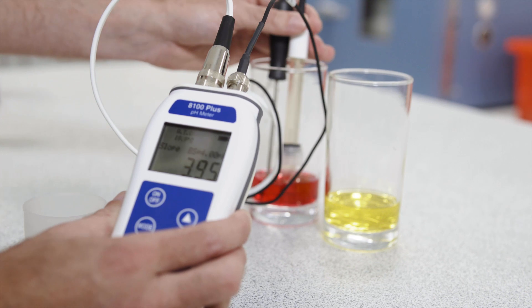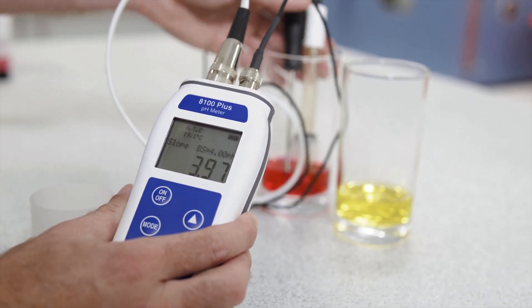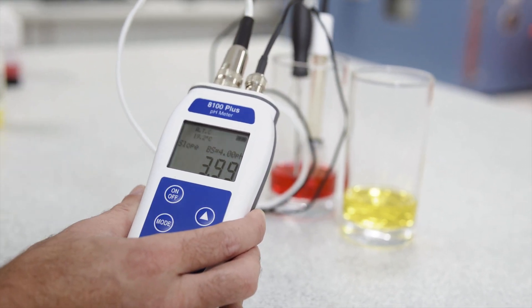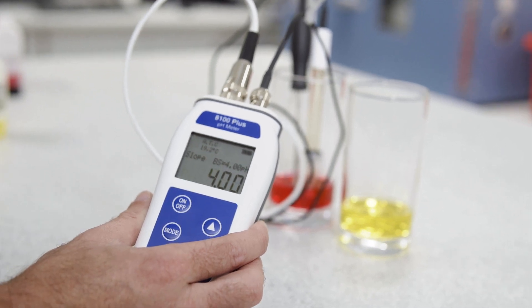The unit will detect the buffer solution and display it on the screen. Ours is pH 4, so the screen is showing slope equals 4.01 pH.